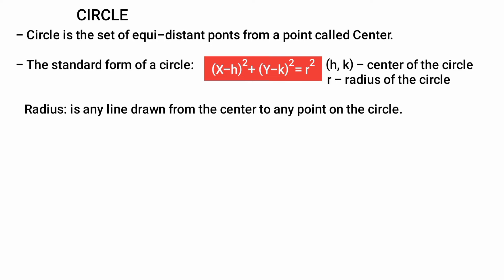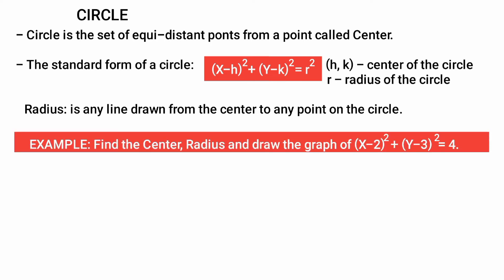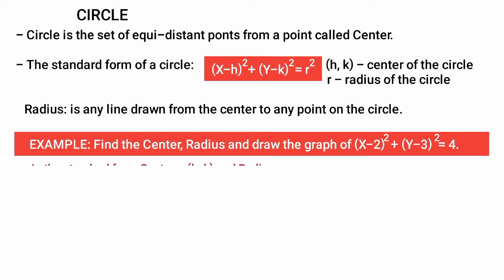Here is an example: find the center, radius, and draw the graph of (X minus 2) squared plus (Y minus 3) squared equals 40. Looking at the standard formula, we can identify the center and the radius from the equation. We have R squared equals 40.